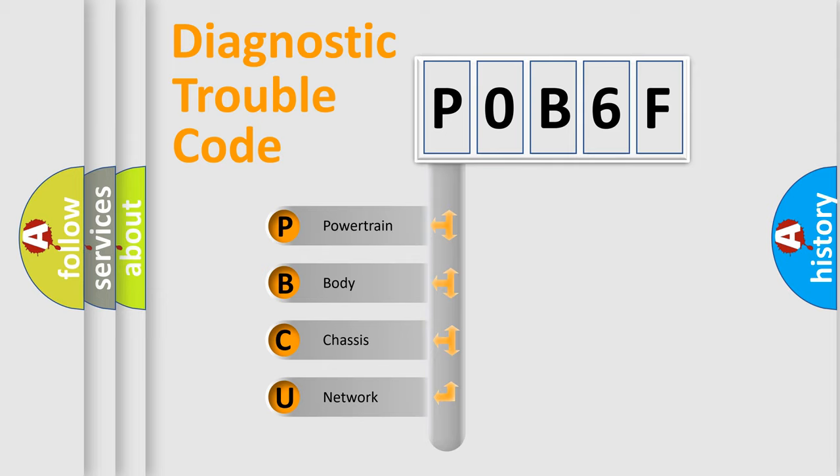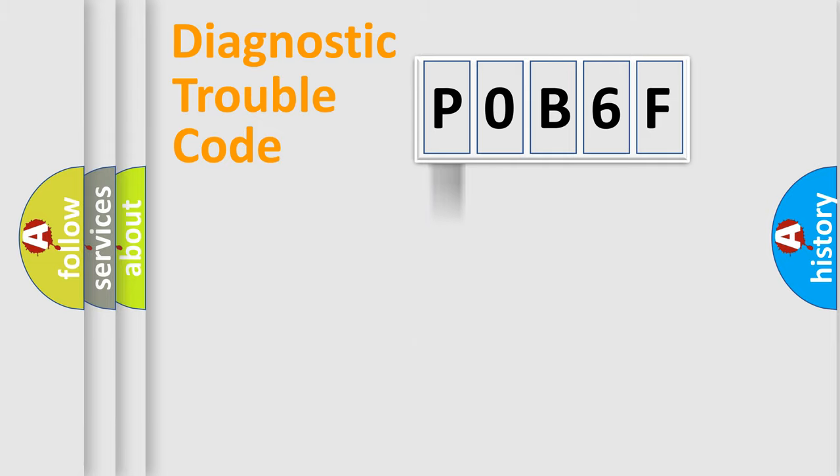We divide the electric system of automobile into four basic units: Powertrain, Body, Chassis, and Network. This distribution is defined in the first character code.